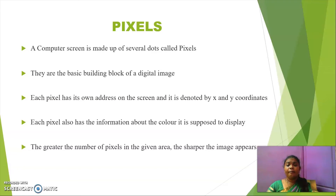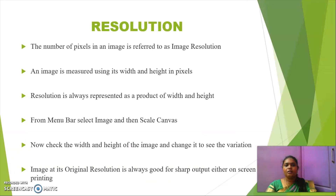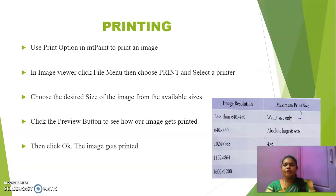Now we are going to see about pixels. A computer screen or an image is made up of several dots called pixels. They are the basic building blocks of a digital image. Each pixel has its own unique address — that is, X and Y coordinates. Each pixel also holds information about what is to be displayed. If the pixel quality is greater, the image will be sharper and clearer. Resolution refers to the number of pixels in an image, and it is always measured as width by height.